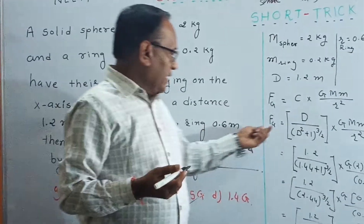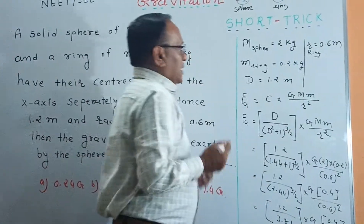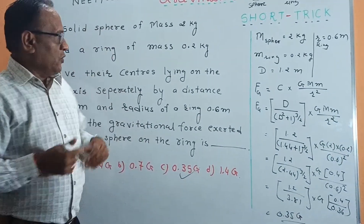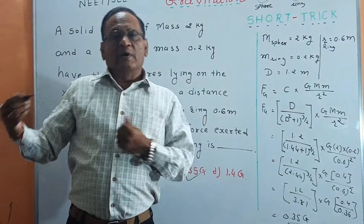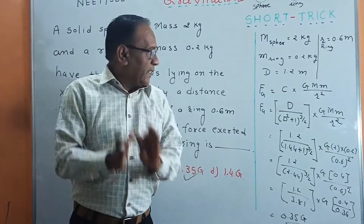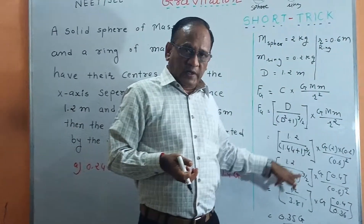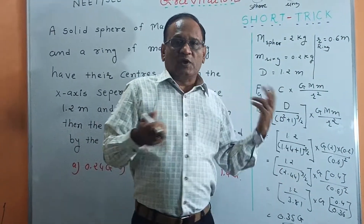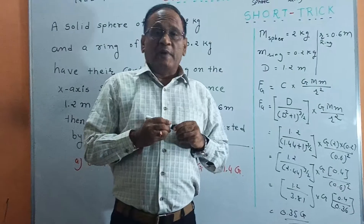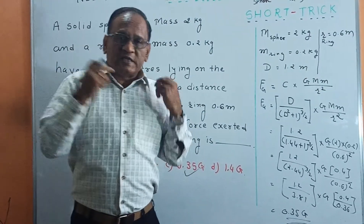It is very easy to solve with this short trick. Remember: for a sphere and a ring, do not directly use GM₁M₂/R². Remember this fact — write down this short trick because solving it directly is very difficult. I post many videos with short tricks for physics and math.